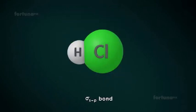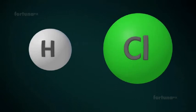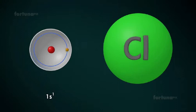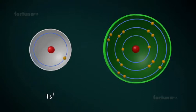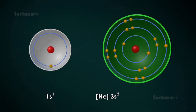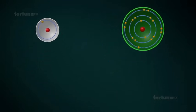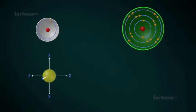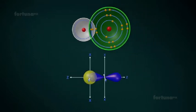Sigma-SP bond. Let's look at a molecule of hydrogen chloride. As we have already seen, the electronic configuration of a hydrogen atom is 1s1 and that of a chlorine atom is Neon, 3s2, 3px2, 3py2, 3pz1. The half-filled 1s orbital of hydrogen overlaps with the half-filled 3pz orbital of chlorine to form a hydrogen chloride molecule.